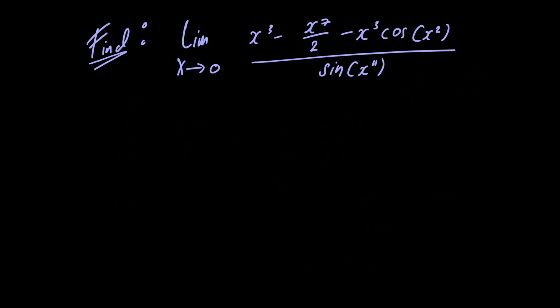Hey everyone. In this video we're going to figure out what the limit is as x approaches 0 of x cubed minus x to the 7th power, divided by 2 minus x cubed, multiplied by cosine of x squared, all divided by sine of x to the 11th power. We can't just evaluate the limit at x equals 0, as sine of 0 is equal to 0 and we would be dividing by 0, which is not allowed.